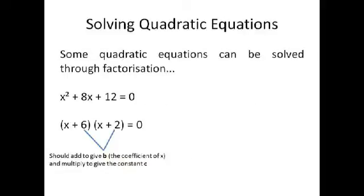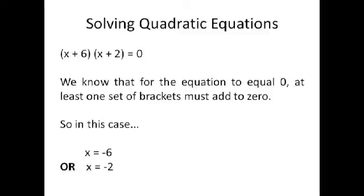If you're lucky you'll get a quadratic equation that can be solved through factorization. An example of this is x² plus 8x plus 12 equals 0. You factorize it into two brackets, so you'll have (x plus 6)(x plus 2) equals 0 in this case, where the 6 and 2, so the second numbers in each bracket, should add to give b which is 8 and multiply to give c which is 12. So we know that for the equation to equal 0 at least one set of brackets must add to 0. So we know that x has got to equal either minus 6 or minus 2. And you've always got to write down both of the solutions, very important.